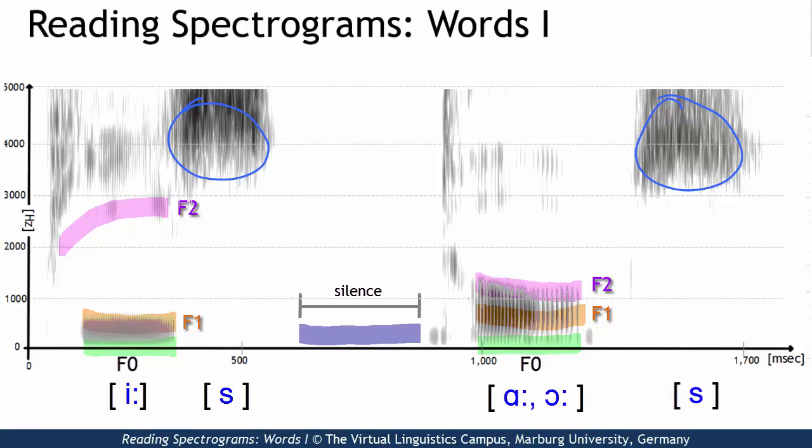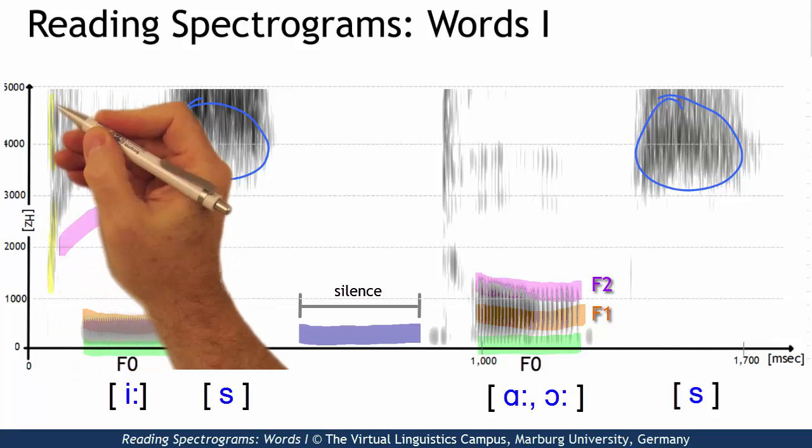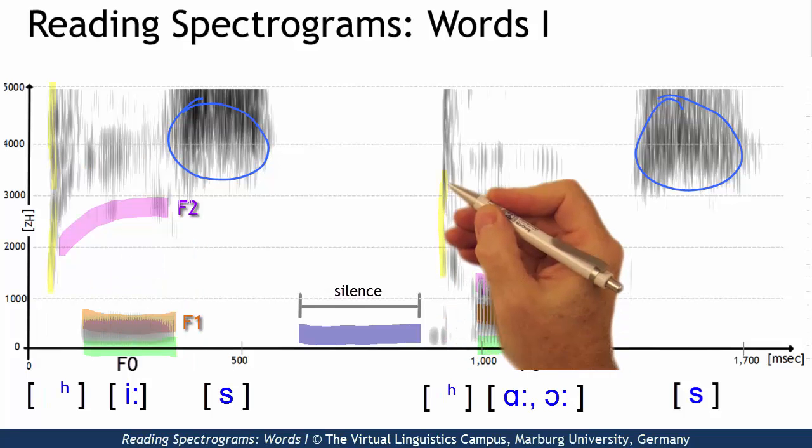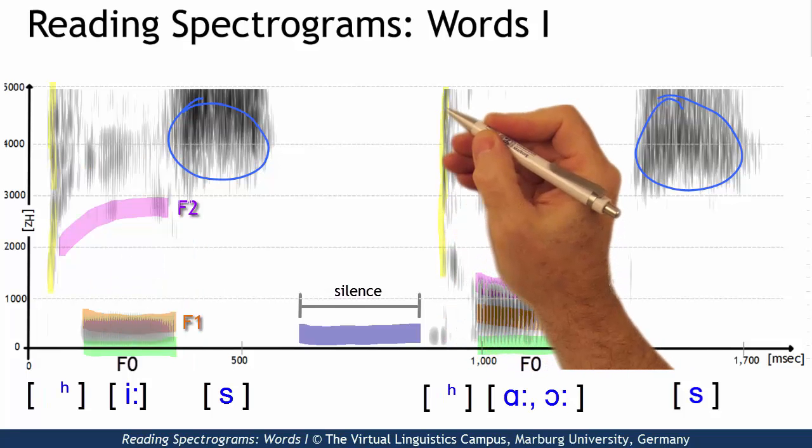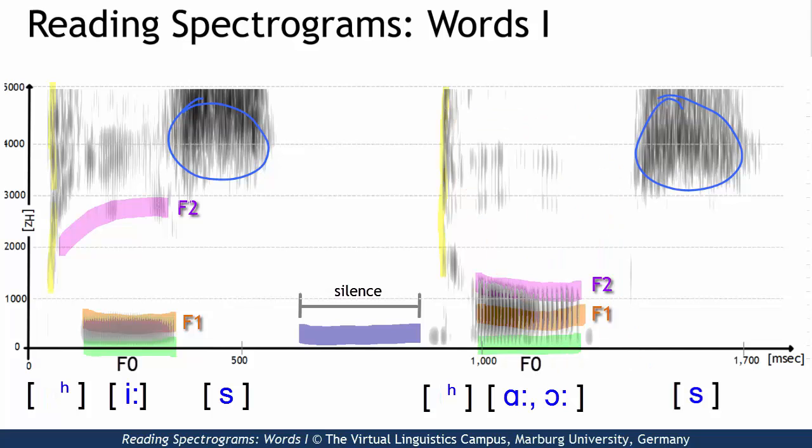The initial elements of both parts must be voiceless plosives, which are both aspirated. They both exhibit a significant burst. The burst frequency of both plosives involves a wide frequency range, but the first one is slightly lower than that of the second. So they must be different.